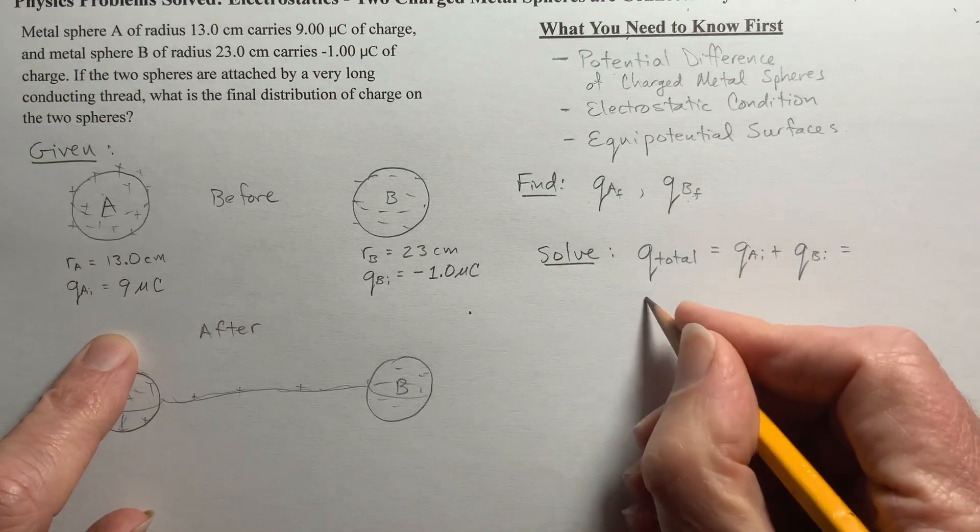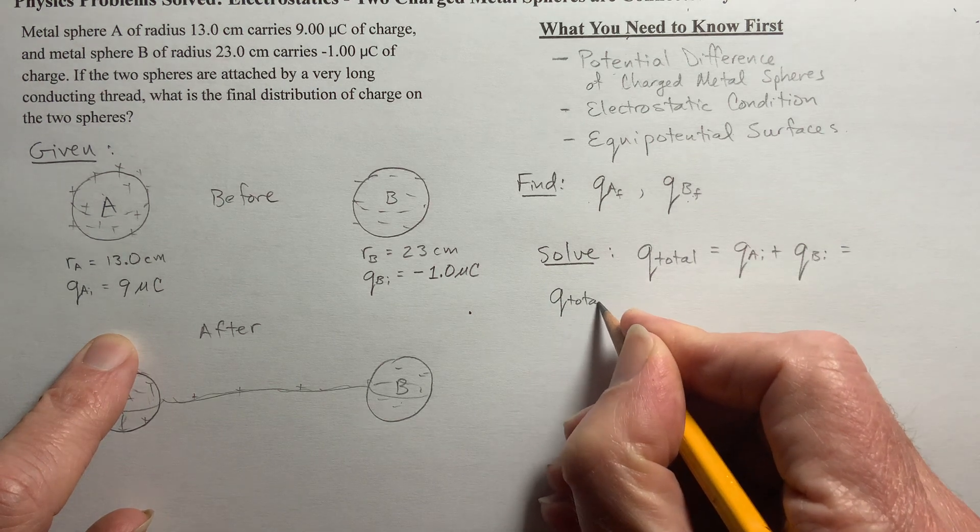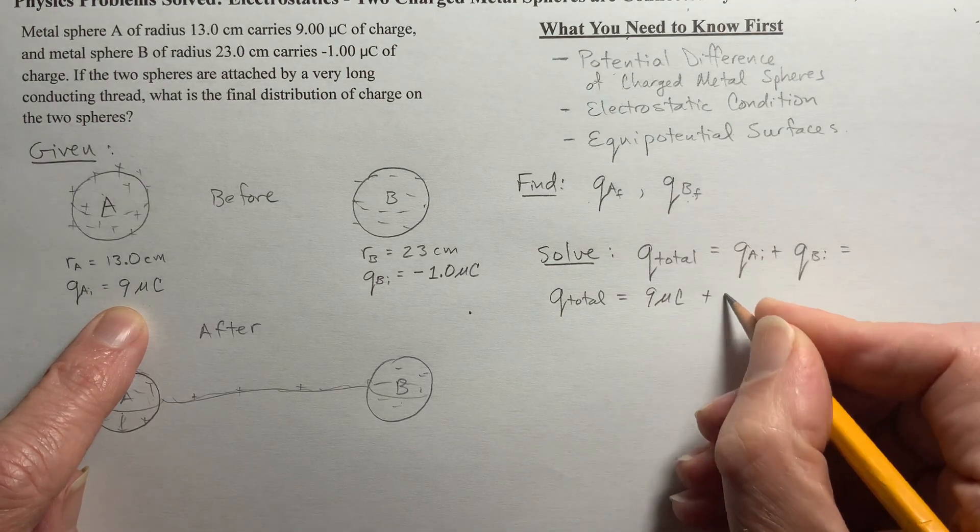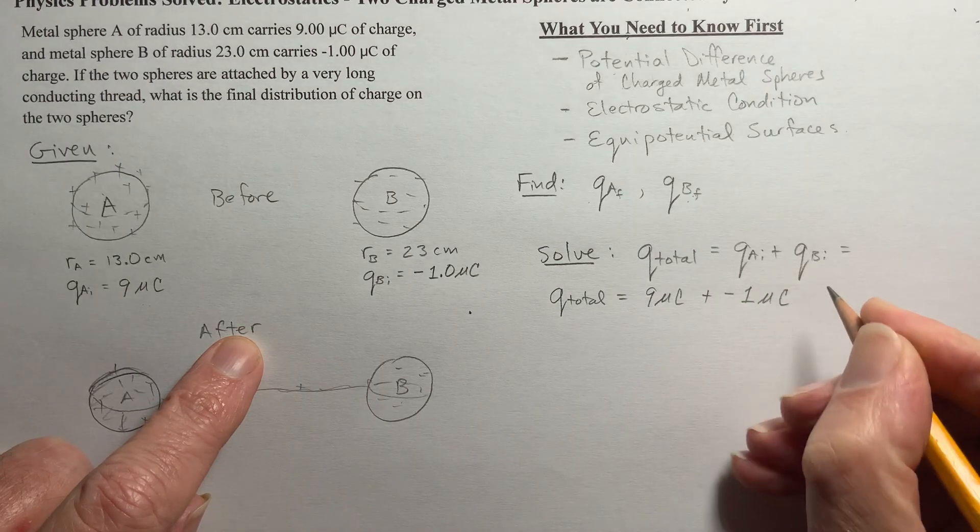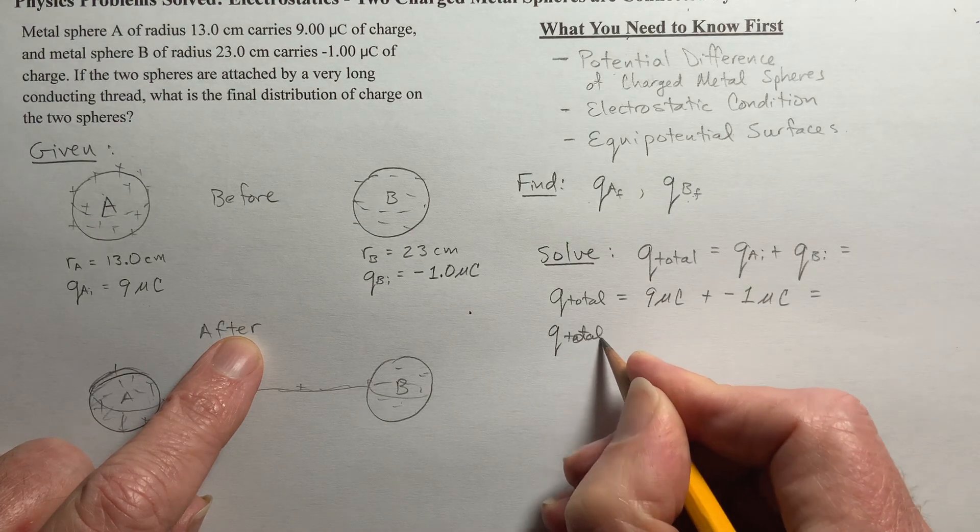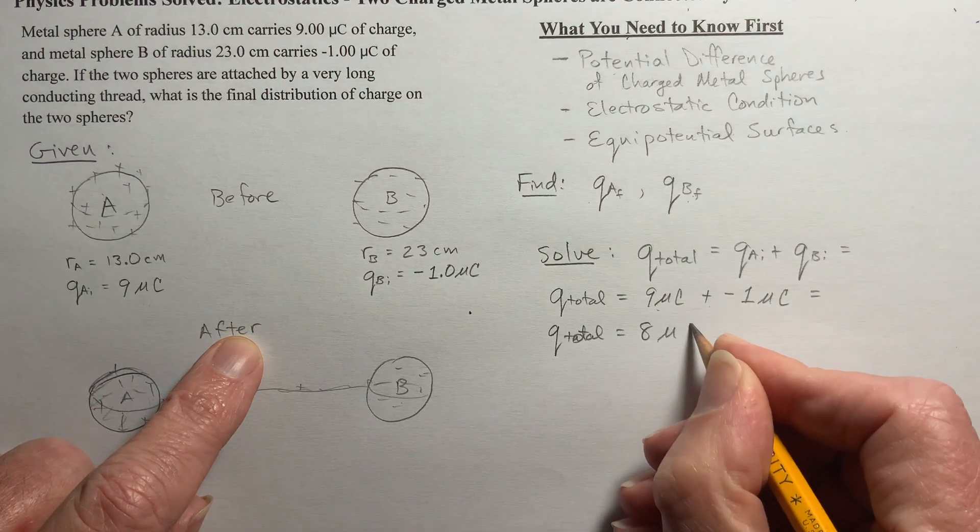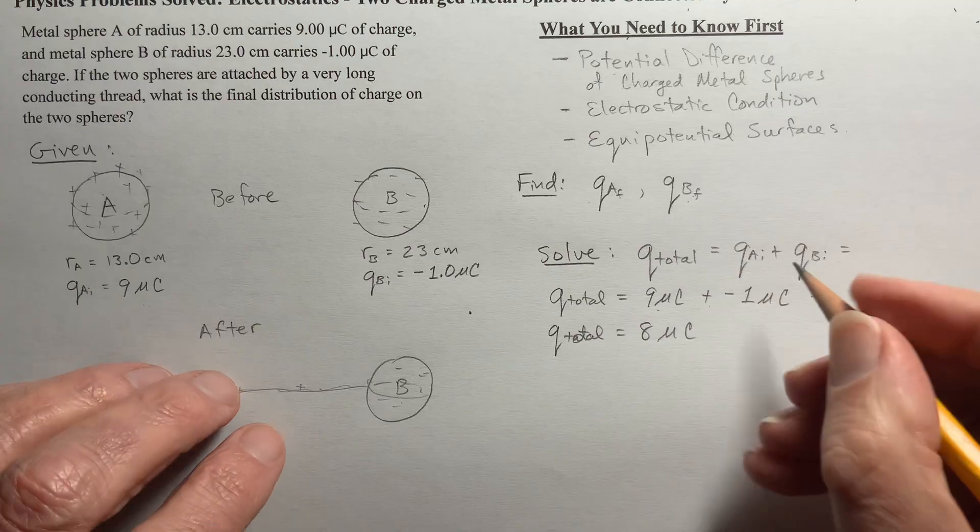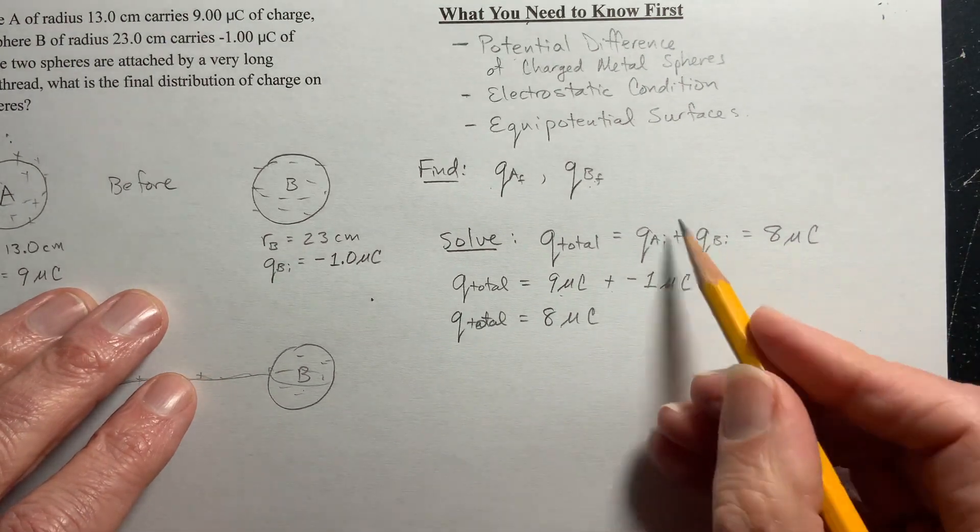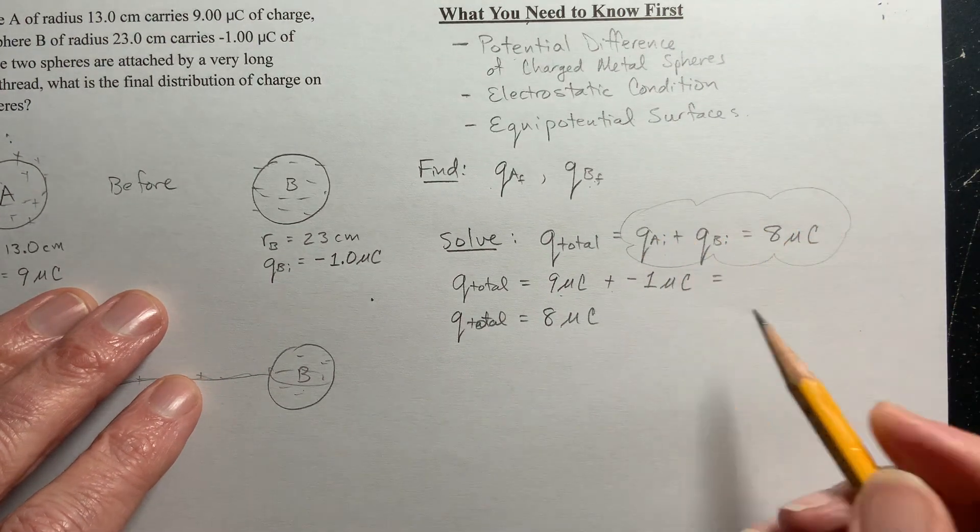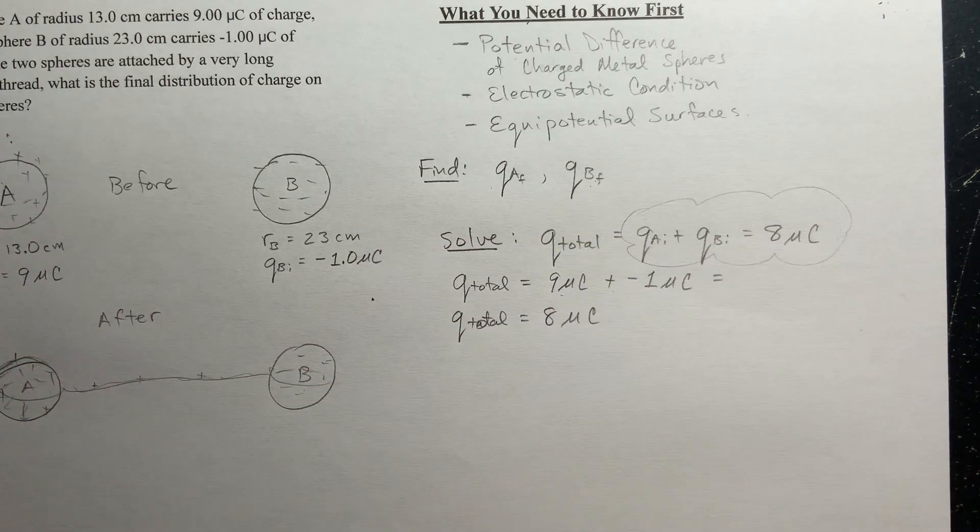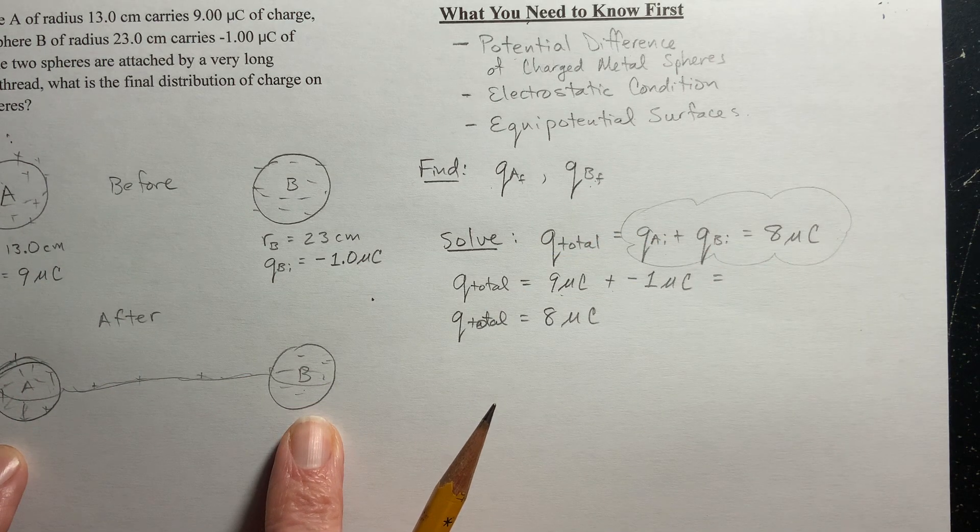Well, the charge on A is given to be 9 microcoulombs, and then B has negative 1 microcoulombs. And when you add these together, the total charge is 9 plus negative 1 is 8 microcoulombs. So QA plus QB is equal to 8 microcoulombs. So I know this is true. It's also true that at the end I'm still going to have a total of 8 microcoulombs.